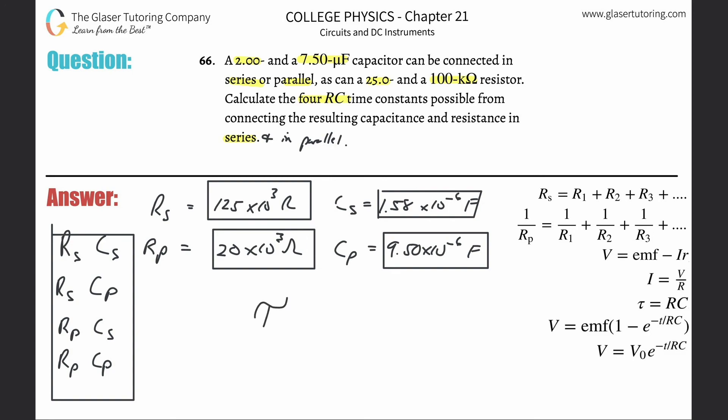Now we find the time constants. The four formulas are: resistance in series multiplied by capacitance in series, resistance in series multiplied by capacitance in parallel, resistance parallel times capacitance in series, and resistance in parallel multiplied by capacitance in parallel. I'm going to choose the first one to calculate. The rest are just plugging in.